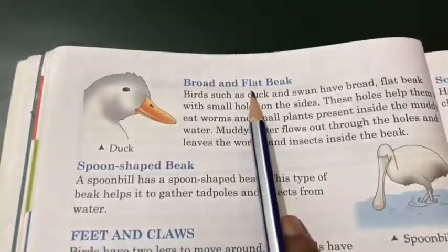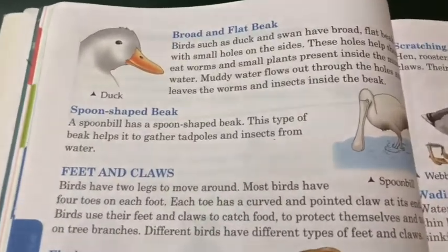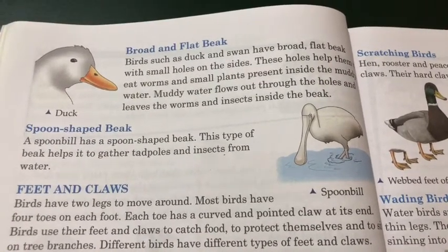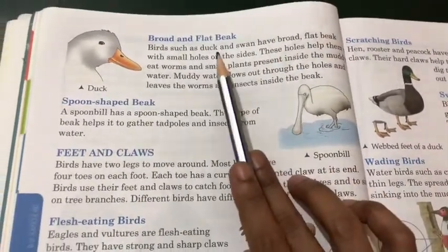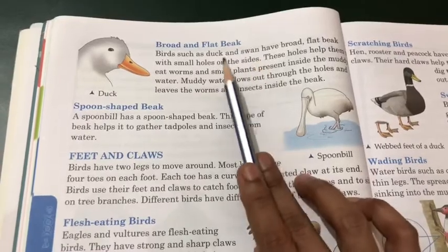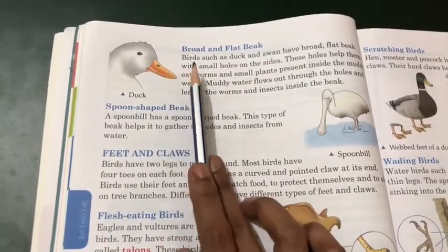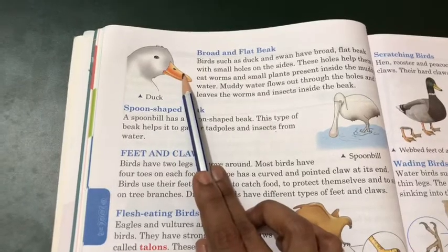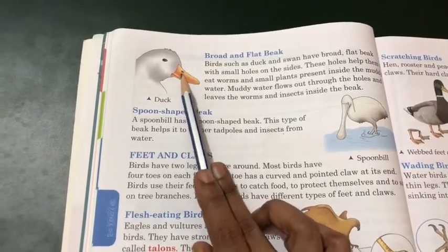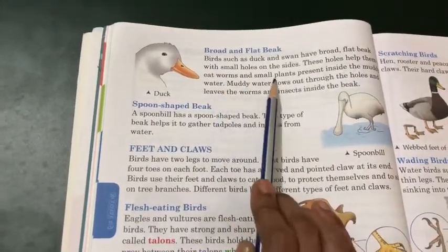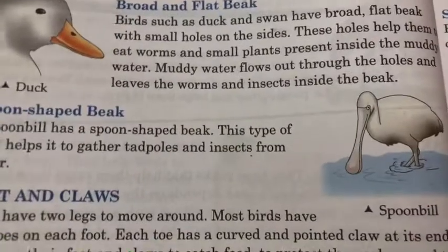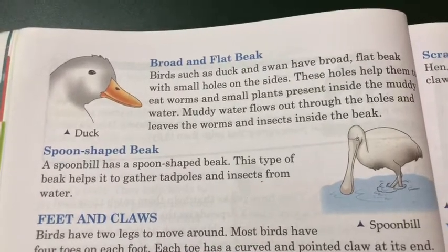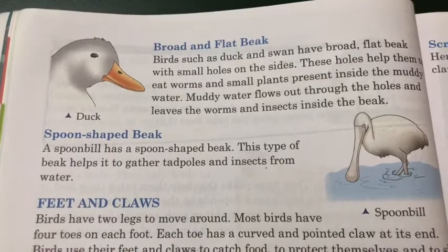Broad and flat beak: Birds such as duck and swan have a broad, flat beak with small holes on the sides. These holes help them to eat worms and small plants present inside muddy water.